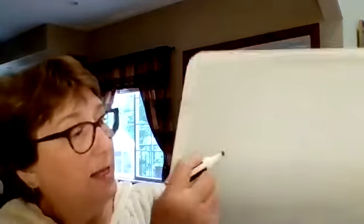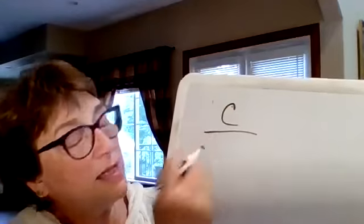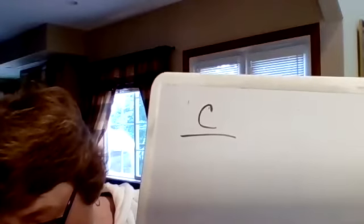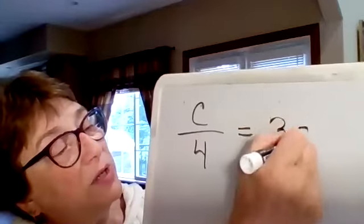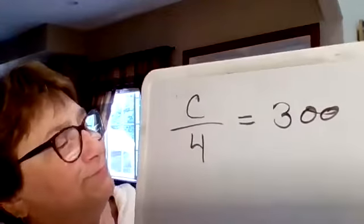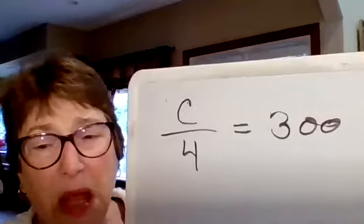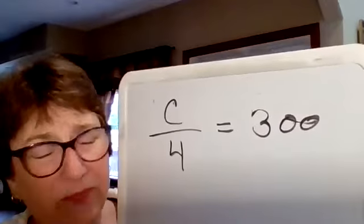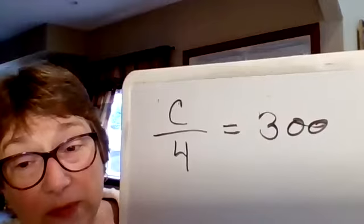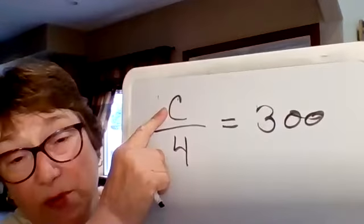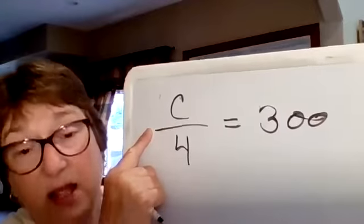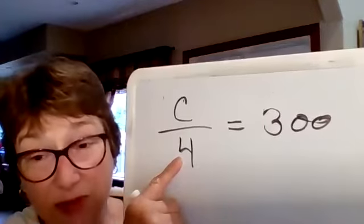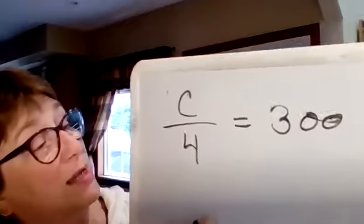How about c over 4 will give us 300. Oh, my. Those are big numbers. What are we going to do? Where's our variable? The letter c is the variable. What's this tell us to do? Divide. We're going to divide by 4. The opposite of dividing is multiplying. So let's do it.